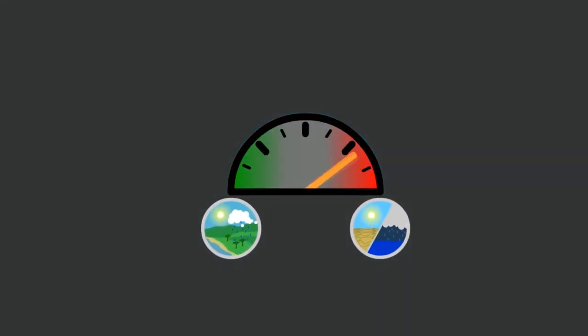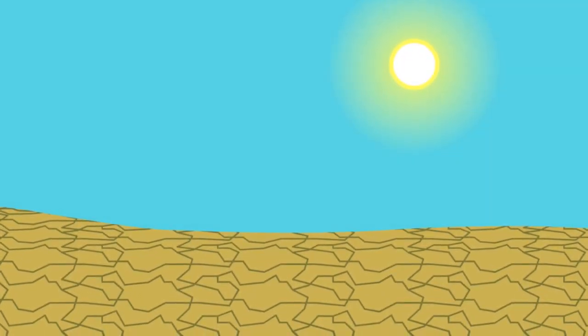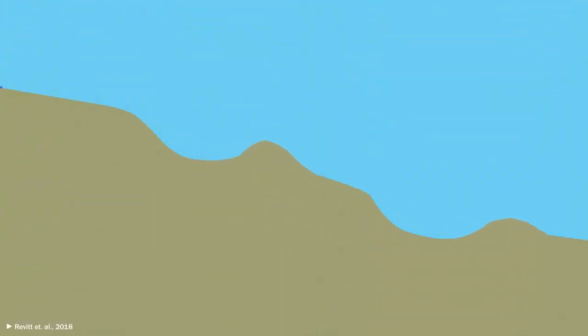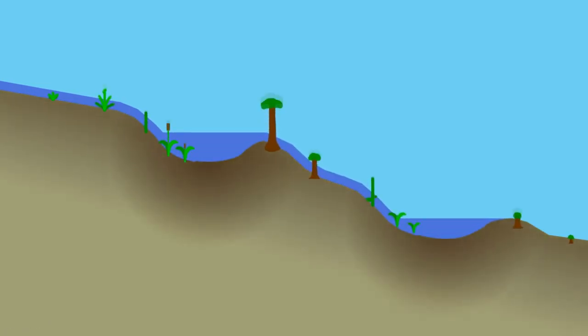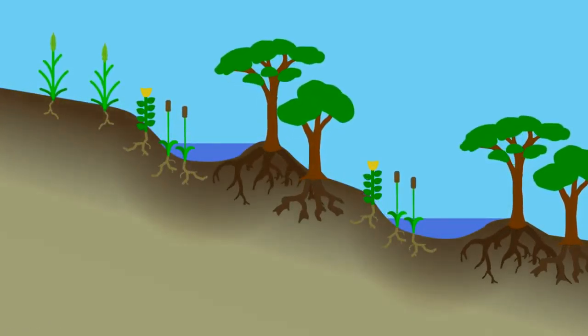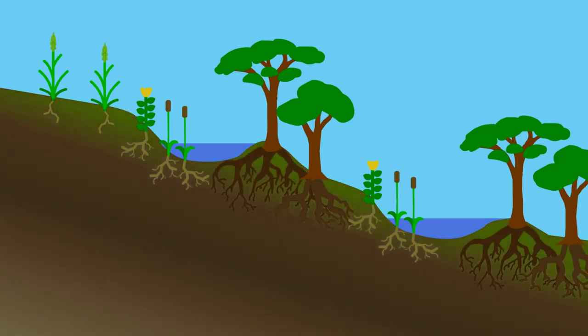Fortunately, it is possible to reverse this trend. There are ways to regenerate ecosystems and restore the water cycle pretty rapidly, while feeding people in the process. Making subtle changes to the land's topography can slow the flow of water, allowing more of it to soak into the ground and be used by plants. Plants with deep roots help break up the compacted soil, allowing water to percolate deeper.